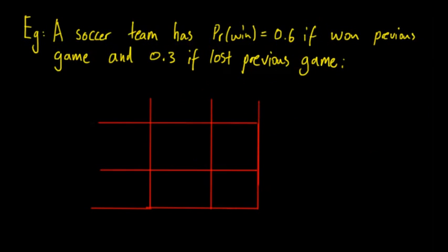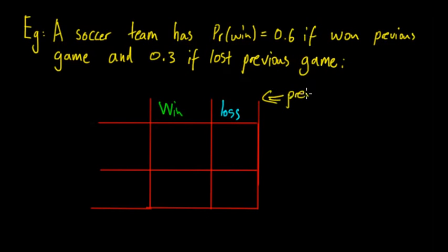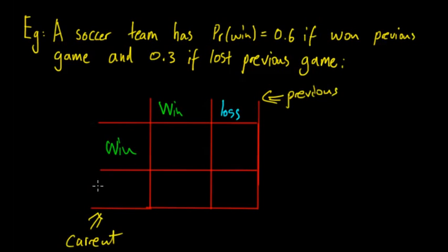We'll start by saying here you have the win and here you have the loss. We have to remember that this is talking about the previous. So this is the previous and this is the current. Then you have win and loss for the current.